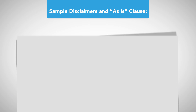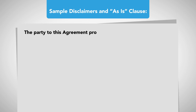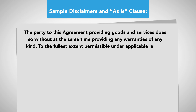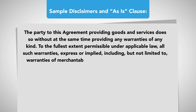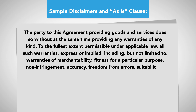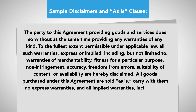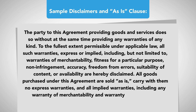Sample disclaimers and As-Is clause: The party to this agreement providing goods and services does so without, at the same time, providing any warranties of any kind. To the fullest extent permissible under applicable law, all such warranties, express or implied, including but not limited to warranties of merchantability, fitness for a particular purpose, non-infringement, accuracy, freedom from errors, suitability of content or availability, are hereby disclaimed. All goods purchased under this agreement are sold as-is, carry with them no express warranties, and all implied warranties, including any warranty of merchantability and warranty of fitness for a particular purpose, are hereby disclaimed.